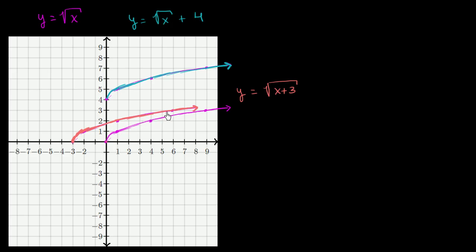You could verify other points to confirm it shifts to the left. This isn't just for radical functions — this is for functions in general. Whatever you add outside shifts it up or down; if it was minus 4, it would shift it down. But when you replace x with x plus 3 inside, that shifts it to the left by 3. If you wanted to shift it to the right by 3, you would put x minus 3 inside.